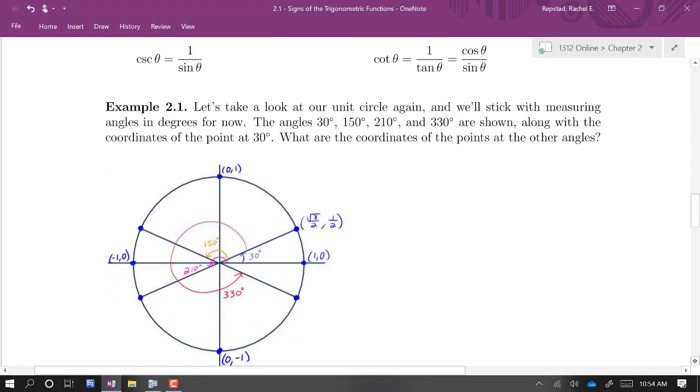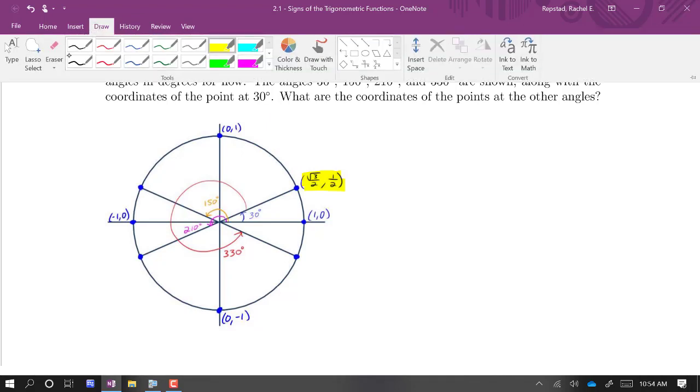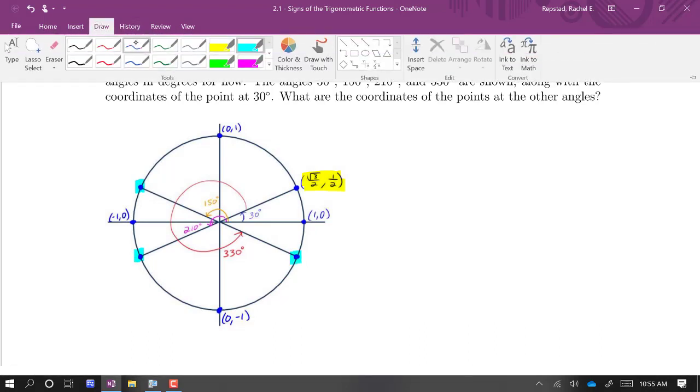So we'll start with this exercise here. We're given the coordinates of the point at 30 degrees. So we know that at 30 degrees, the x coordinate on the unit circle is the square root of 3 over 2 and the y coordinate is 1 half. We can find the coordinates of these other points. There are three other points here that we're going to focus on, and we'll do that by using the symmetry of the circle.